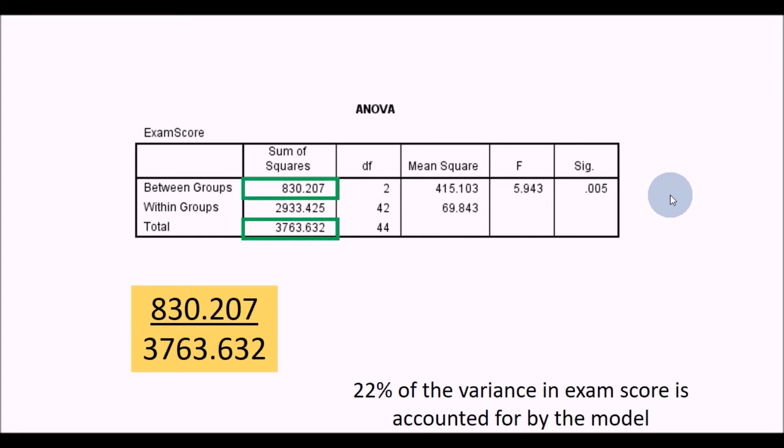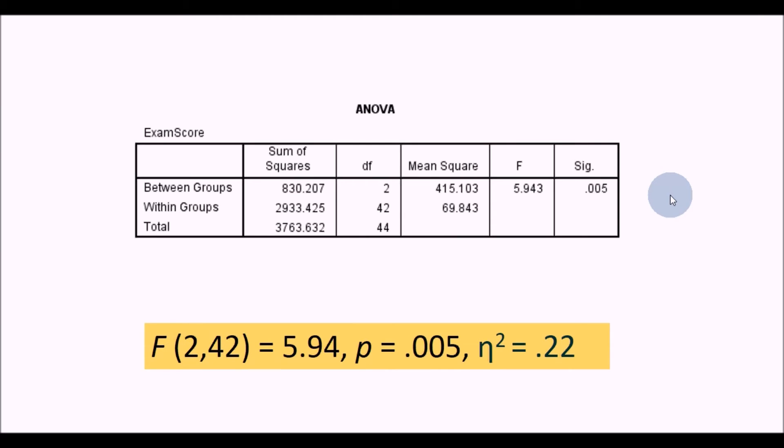We'll run through the example here. We take this number, sum of squares between groups 830.207, divide that by the total which is 3763.632, which gives you an eta squared of 0.22. What that means is 22% of the variance in exam score is accounted for by this model. In a one-way ANOVA you do need to calculate this by hand, but you can see it's very straightforward. In more complex ANOVAs it's a little bit more fiddly because you're calculating eta squared and partial eta squared, but fortunately SPSS does that for you when you go on to factorial ANOVAs.